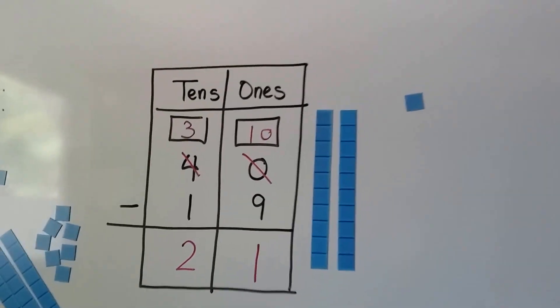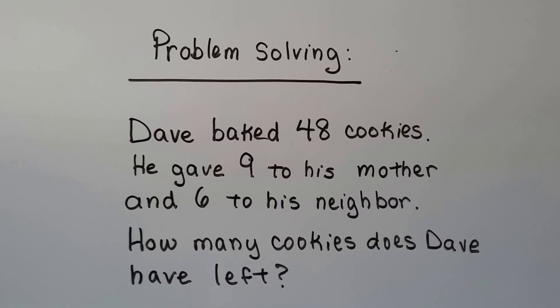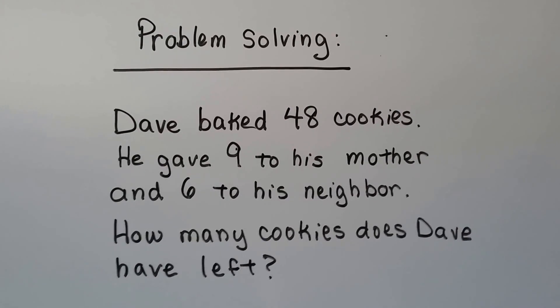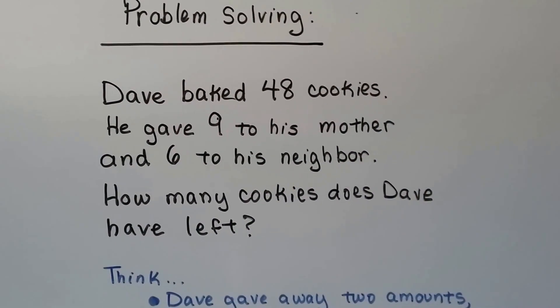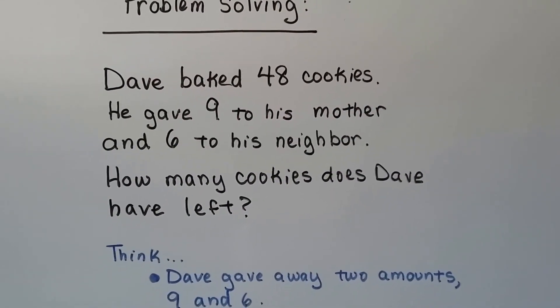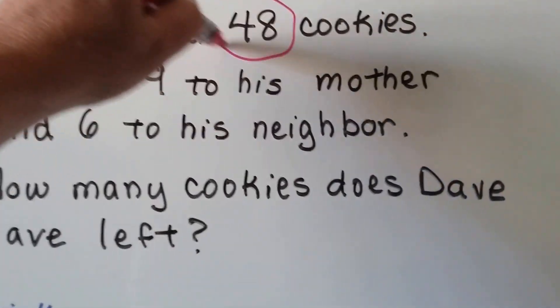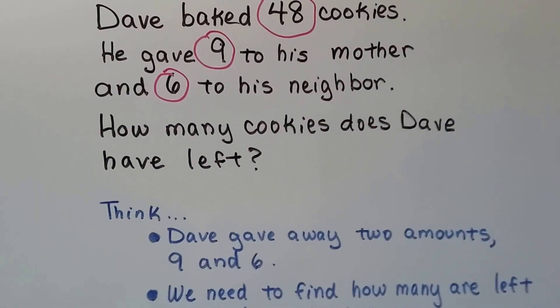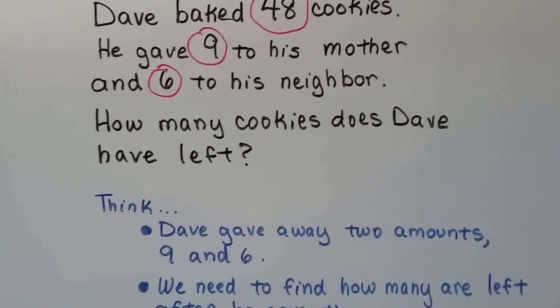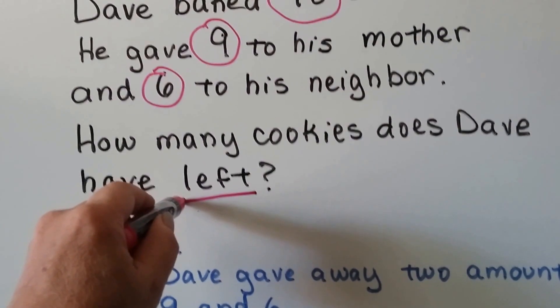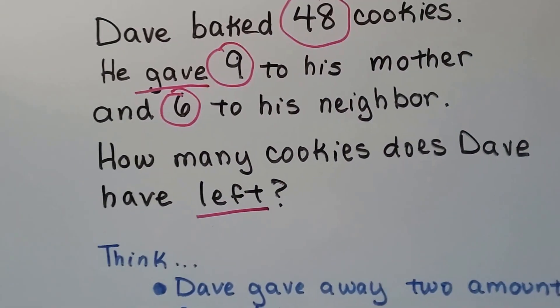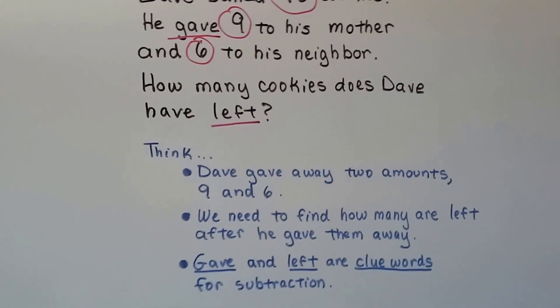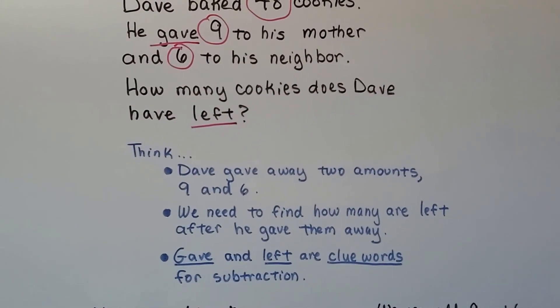Let's try some problem solving. Dave baked 48 cookies. He gave 9 to his mother and 6 to his neighbor. How many cookies does Dave have left? So we think Dave gave away two amounts, 9 and 6. So our important numbers here are he had 48, he gave away 9, he gave away 6. We need to find out how many are left after he gave them away. So our clue word is left and another clue word is he gave them. He didn't get them, he gave them. That means he has less. Gave and left are clue words for subtraction. So we know we have a subtraction problem.